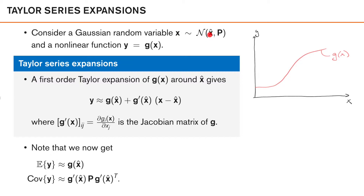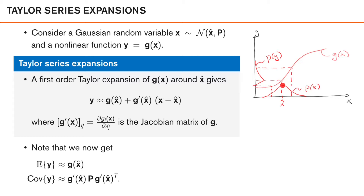We know that x is Gaussian with mean x̂ and variance P, which we can illustrate by drawing a Gaussian density on the x-axis. This density is transformed through our nonlinear function to get p(y). The mean gets transformed, as do minus one and plus one standard deviations. What we see is that we no longer have a nice bell shape — so this is not a Gaussian density anymore. What we instead want to do is linearize g using a first-order Taylor expansion around x̂, around the point where p(x) has the most probability mass.